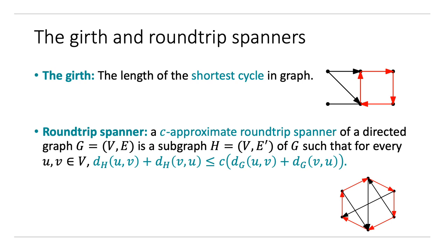For example, in this graph, the red subgraph is a 2-approximated round-trip spanner because any two nodes in the original graph are in a cycle of length 3 or more, and now any two nodes are in a cycle of length 6 in the red subgraph.